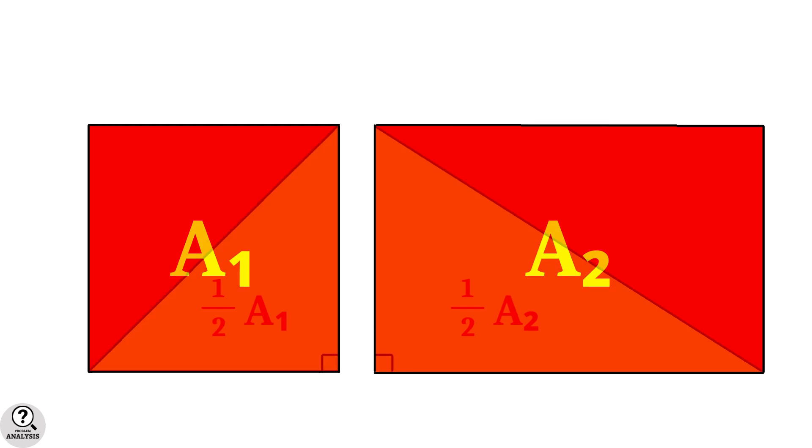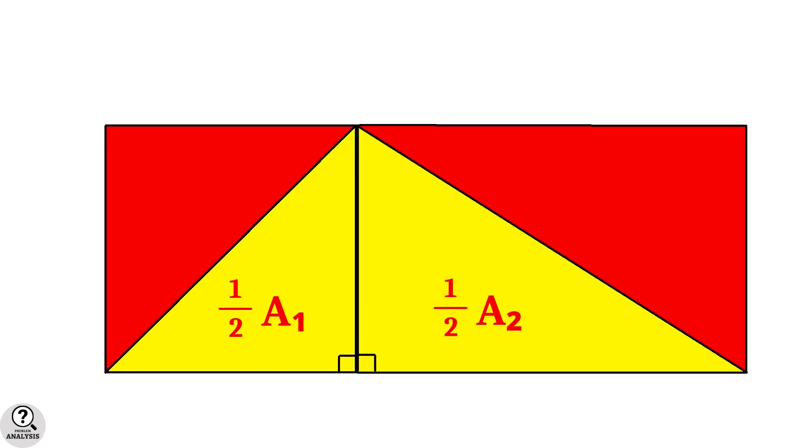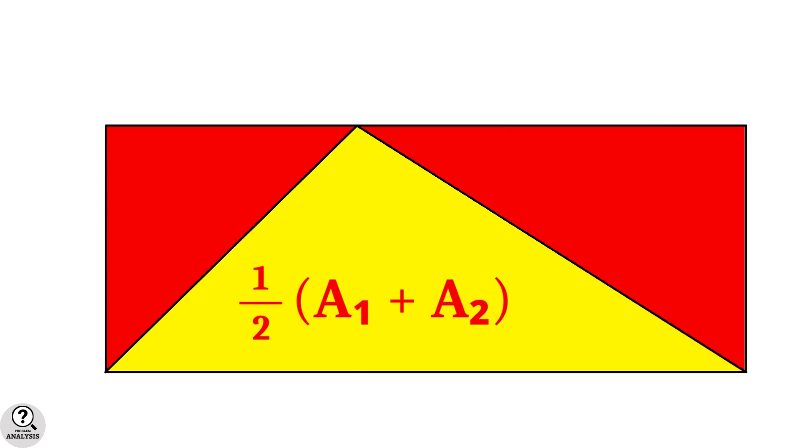Now join them together. Then the total area of the triangle will be half A1 plus half A2, which is equal to half into A1 plus A2. Now what is A1 plus A2?